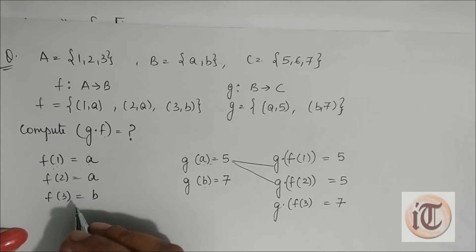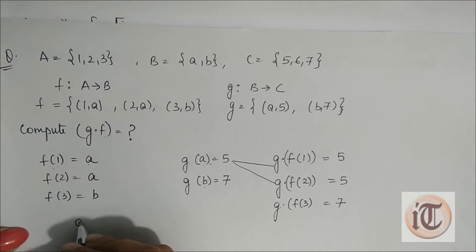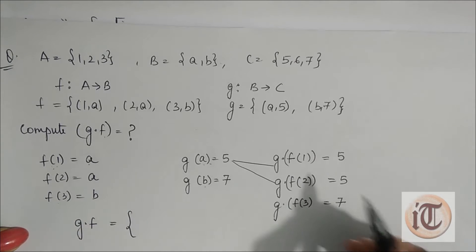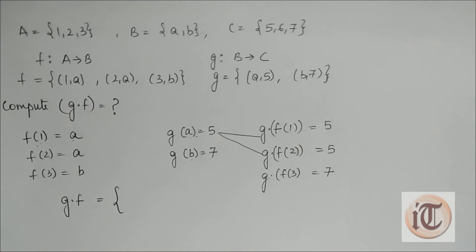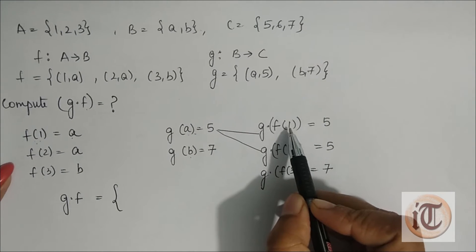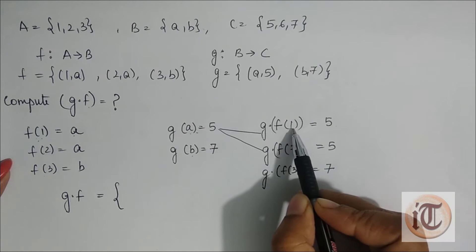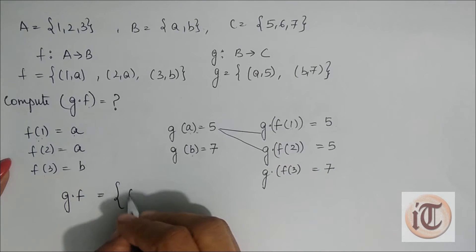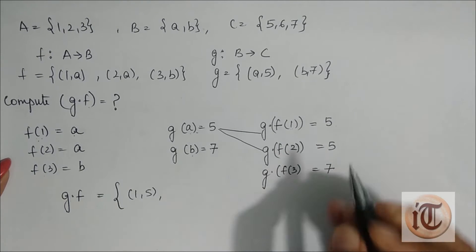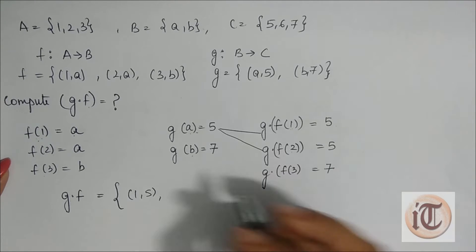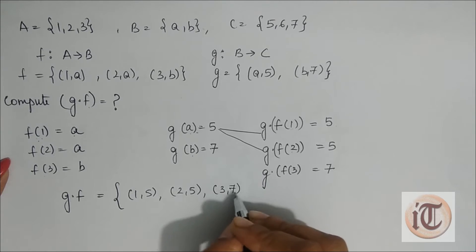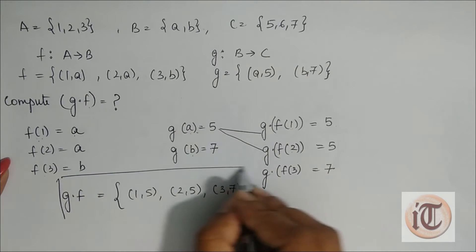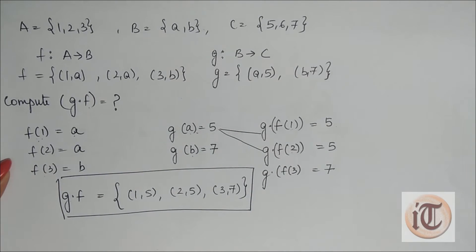So g dot f equals the set {(1,5), (2,5), (3,7)}. This is the answer showing how we calculate the composition of f and g, denoted as g dot f.